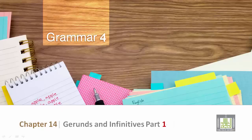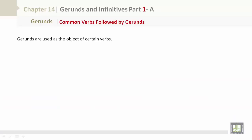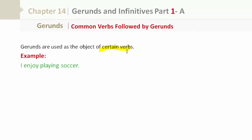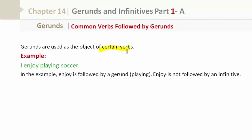Common verbs followed by gerunds. Gerunds are used as the object of certain verbs. For example, 'I enjoy playing soccer.' Here, 'enjoy' is followed by the gerund 'playing.' Enjoy is not followed by an infinitive — 'I enjoy to play soccer' is incorrect. You would not use this in any normal context.